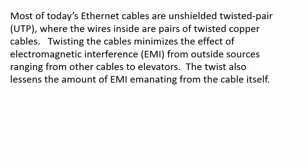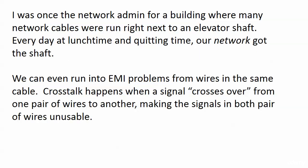Most of today's Ethernet cables are unshielded twisted pair, UTP, where the wires inside are pairs of twisted copper cables — four pairs, eight wires overall. Why the twisted pair? Twisting the cables minimizes the effect of EMI, electromagnetic interference, from outside sources ranging from other cables to other wires in the same cable to actually elevators. That twisting also lessens the amount of EMI that the wires are putting out, so it's minimizing EMI coming in and also preventing as much of it as possible from going out.